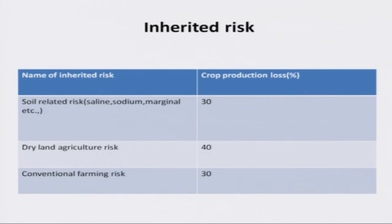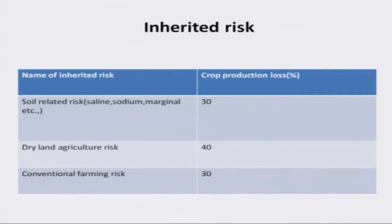Inherited risk exists over years and generations — in India, a generation is typically 25 years. Historically, over seven or eight generations or more than 1,000 years, soil may be sodium-affected, saline, or marginal. This risk can be changed through technology, but it is not cost-effective. The crop production loss associated with this inherent soil-related risk — saline, sodium, or marginal soil — is about 30%.